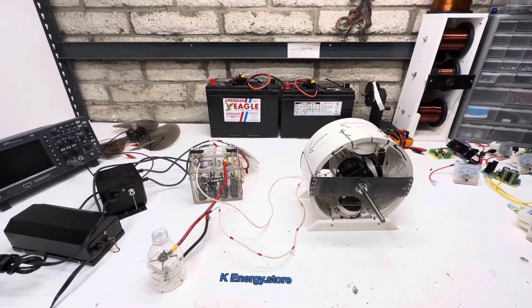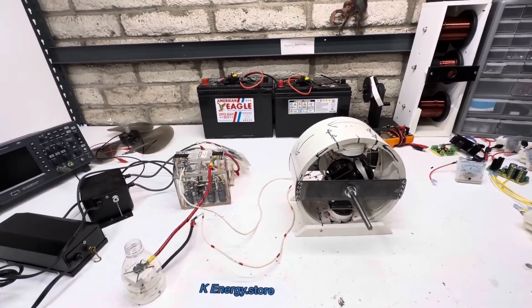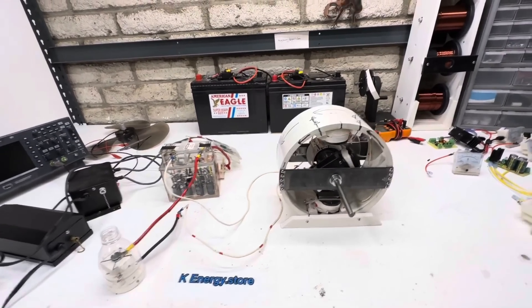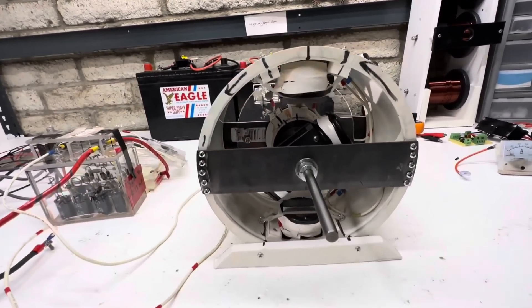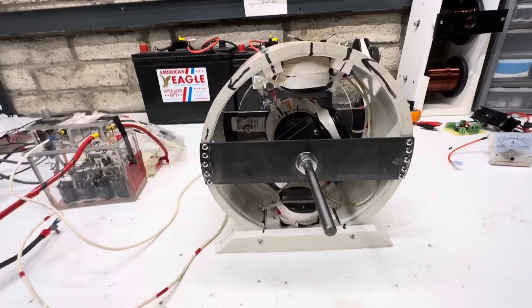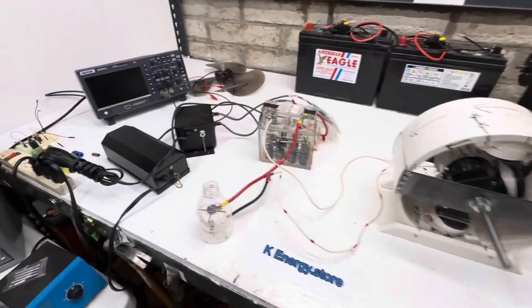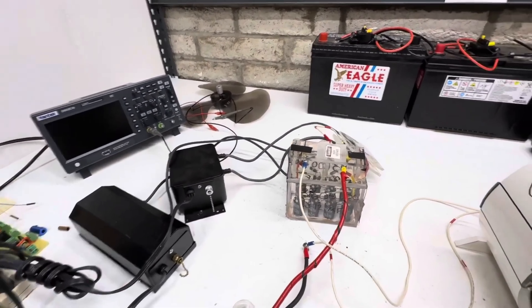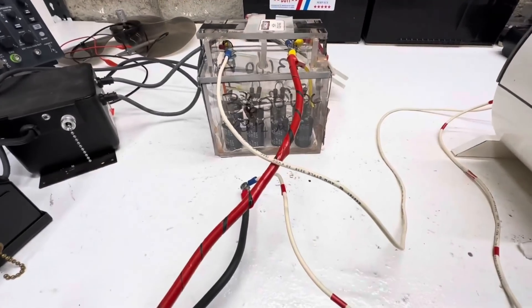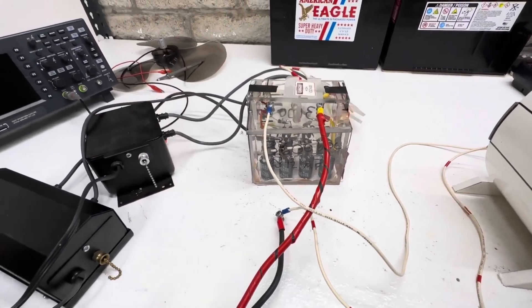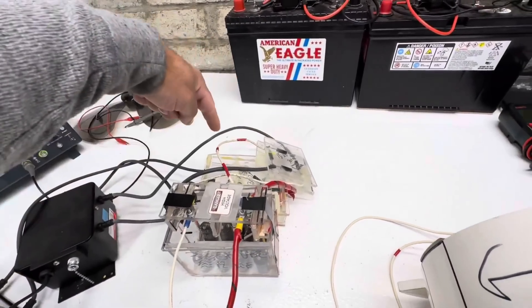The Gray motor's working principle was based on the concept of cold electricity, a term used to describe a form of energy that was not generated through the burning of fossil fuels or the use of nuclear power. Instead, Gray's device was able to harness the natural electrical charge present in the environment, converting it into a usable form of electricity.